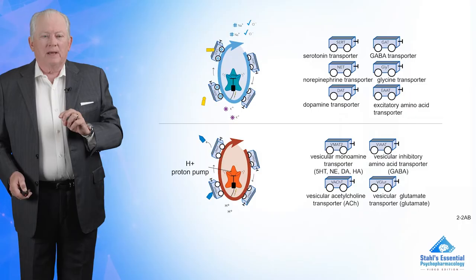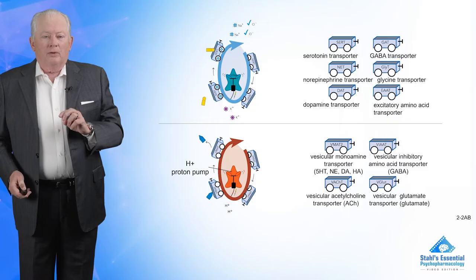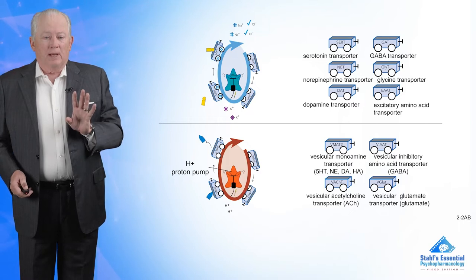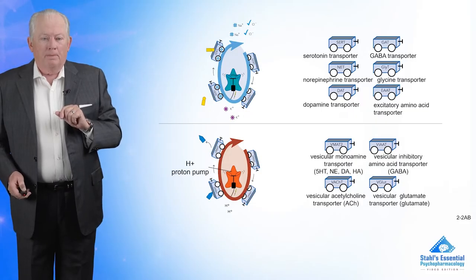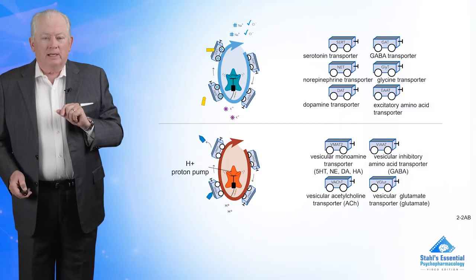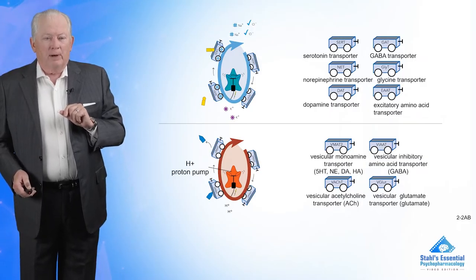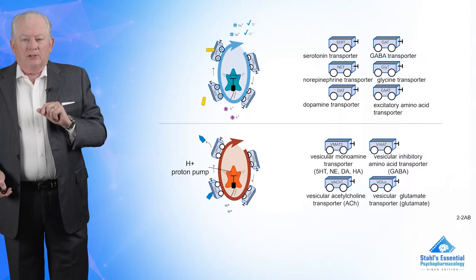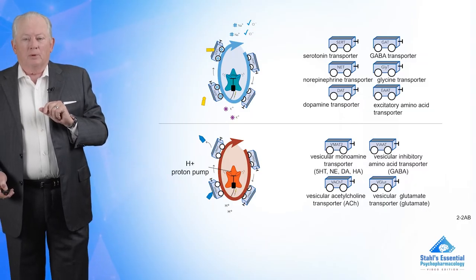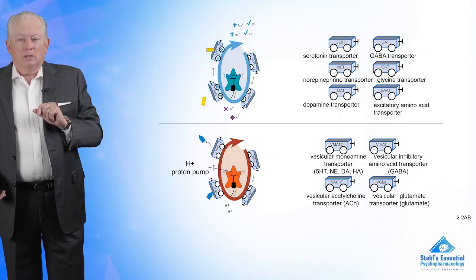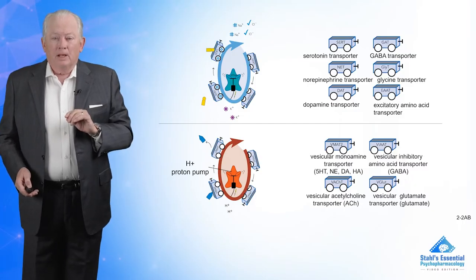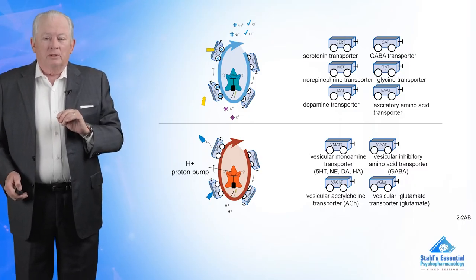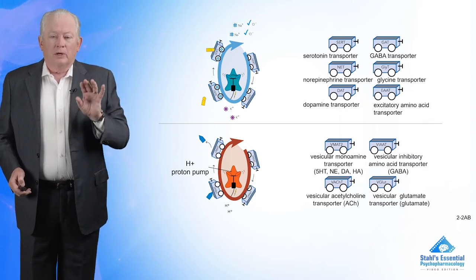Inside the synaptic vesicle, the pump tries to get rid of all the positive charges. A neurotransmitter, which is also positively charged, exchanges places with them. You have a proton pump which pumps the protons out and allows the charge of the monoamine to come in. These are called VMATs — vesicular monoamine transporters. An important one we'll discuss in the tardive dyskinesia chapter is VMAT2, which transports serotonin, norepinephrine, dopamine, and histamine.